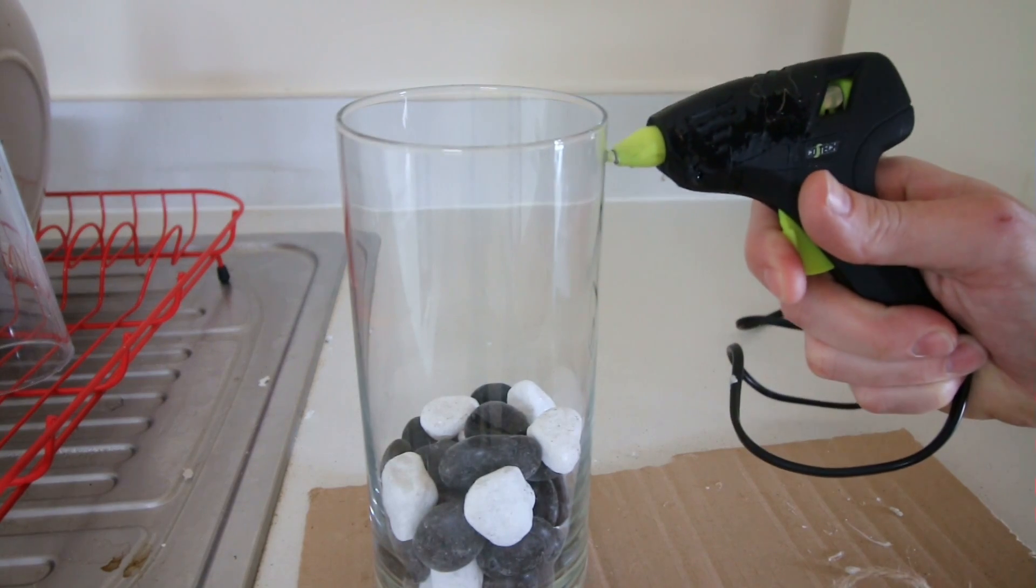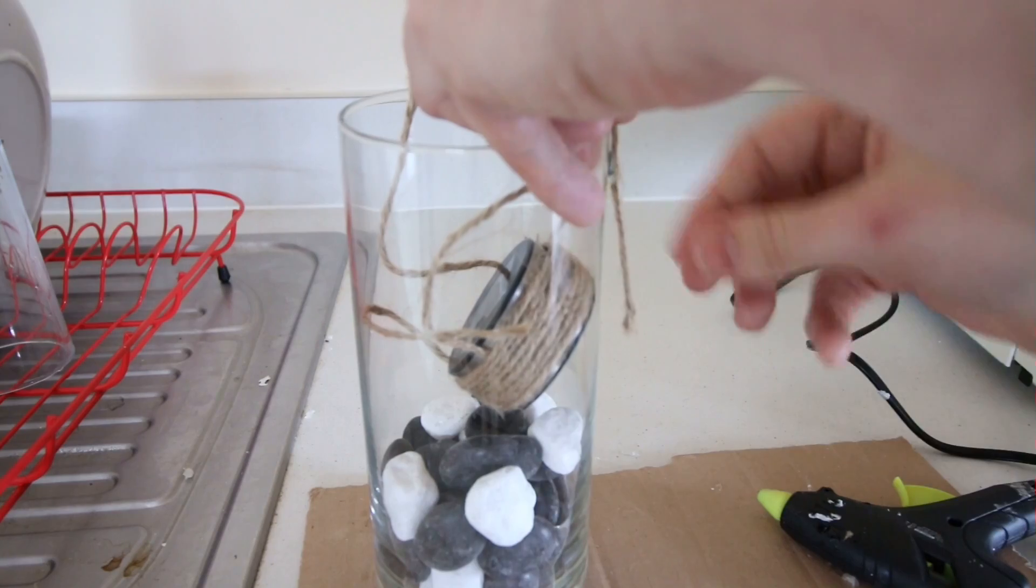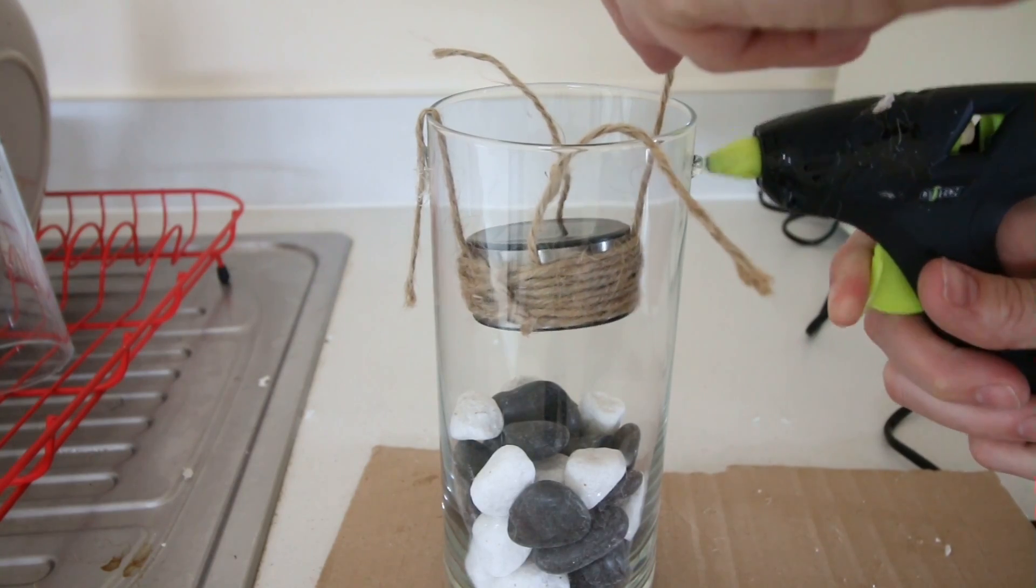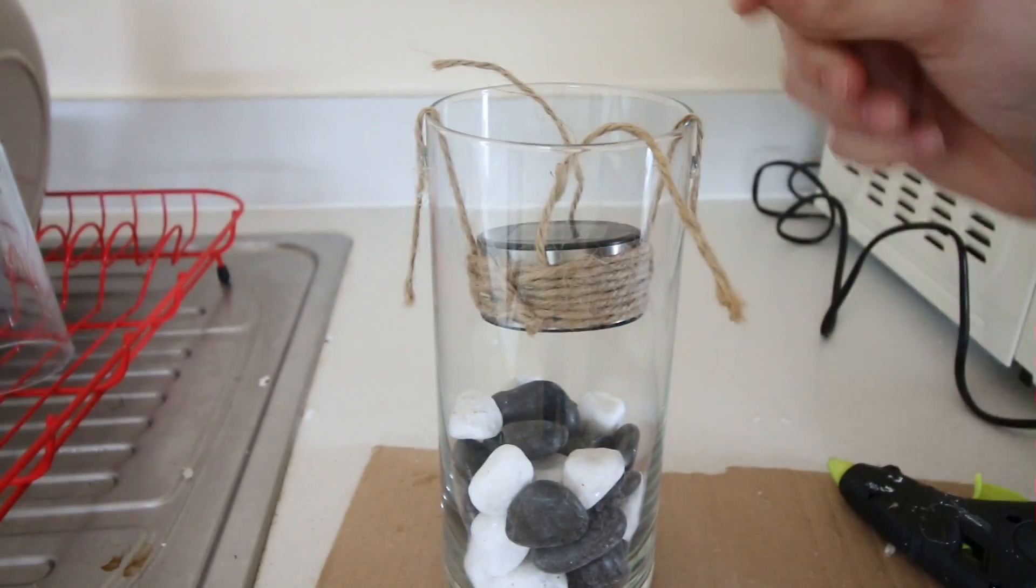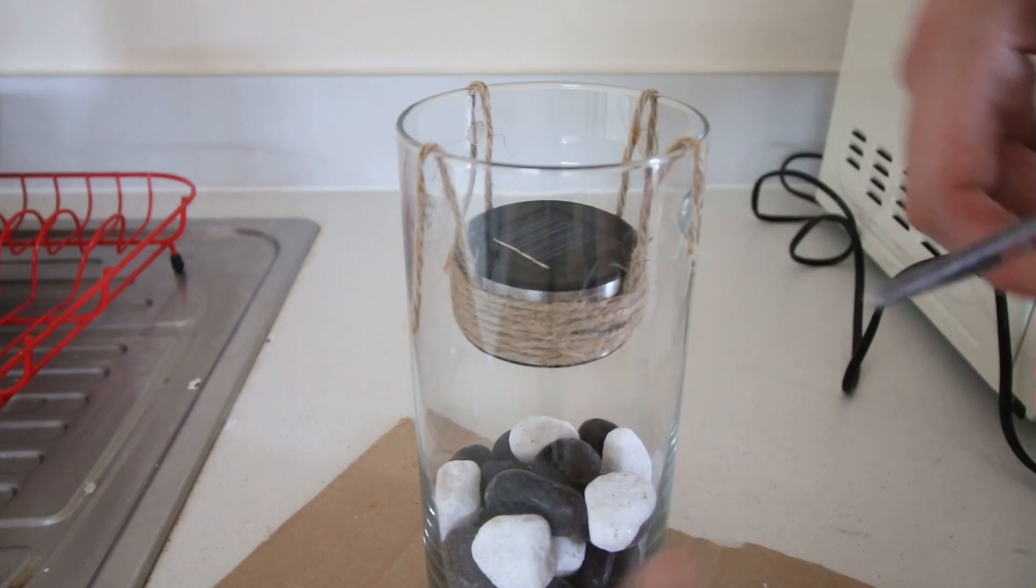Once that was done, I glued the four pieces of string across from each other on the outer rim of the candle holder, so it would suspend the solar panel like so. There we go. Just need to trim off the remaining string.